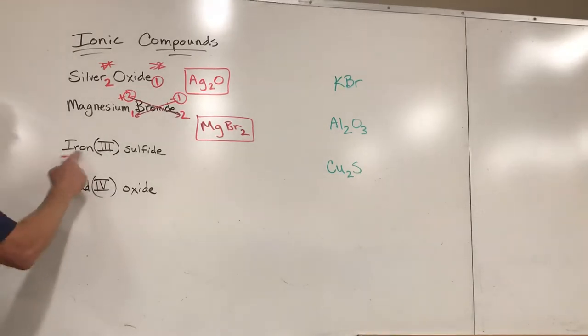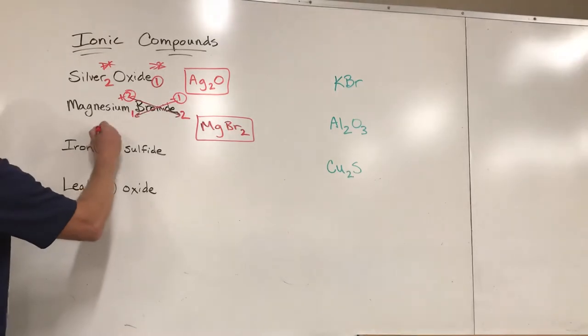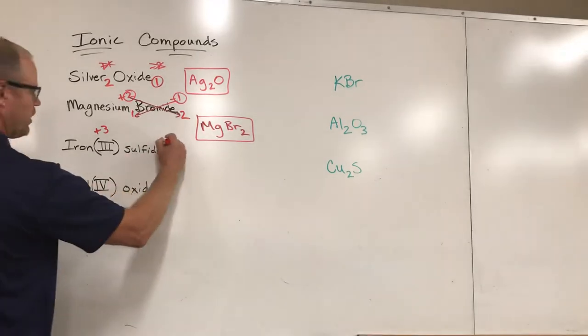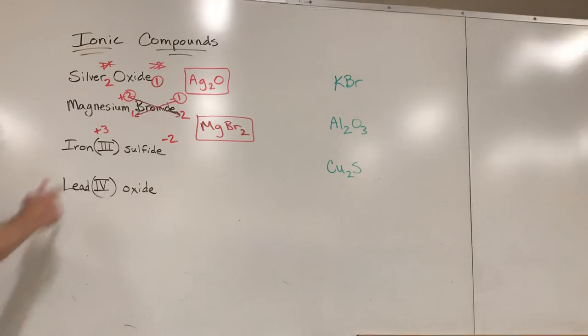When you get a transition metal, some transition metals have more than one possible ion they can form. So this one is telling us which one we're dealing with. That's a roman numeral three - that means iron is going to be the plus three charge. That's the form of the ion that's going to be used here in this compound.